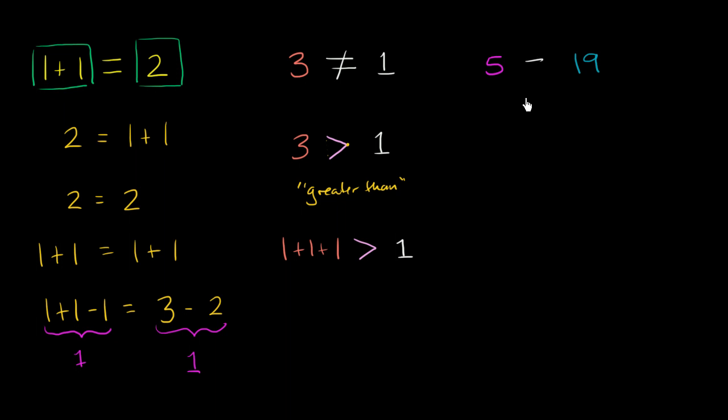Well, if in plain English, I would want to say 5 is less than 19. So I would want to say, let me write that down. I want to write 5 is less than 19. That's what I want to say.